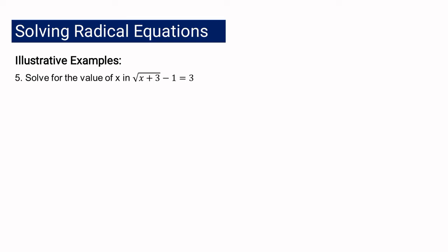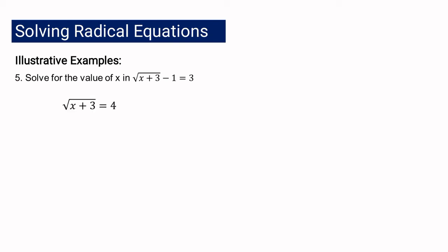Let us consider example number 5: square root of (x plus 3) minus 1 equals 4. We proceed with step 2 and combine similar terms. We have a constant on the left and a constant on the right, so using the addition property of equality, we move the 1 to the right side, giving: square root of (x plus 3) equals 5. Wait — 4 plus 1 equals 5. We are now ready for step 3 and will square both sides since the index is 2.